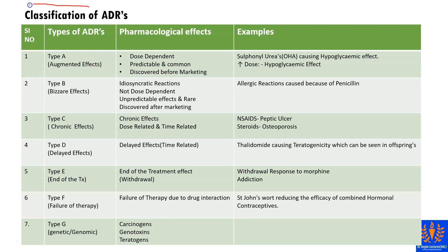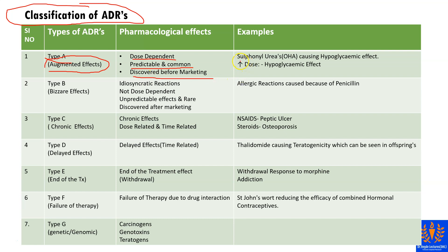Now we can see the classification of adverse drug reactions. Type A stands for augmented reactions, which are dose dependent, predictable, and the most common effects — discovered before marketing. An example would be sulfonyl ureas causing a hypoglycemic effect which is dose dependent; when we increase the dose of sulfonyl ureas, the hypoglycemic effect can be seen.